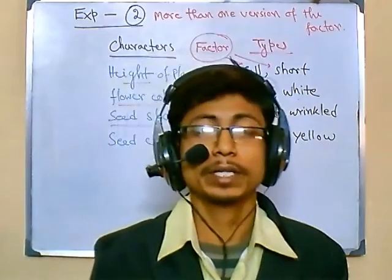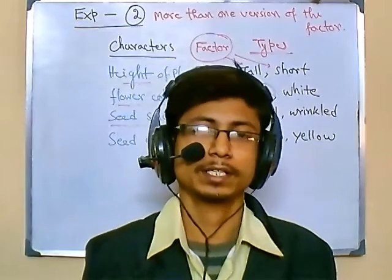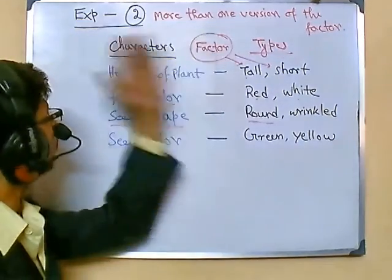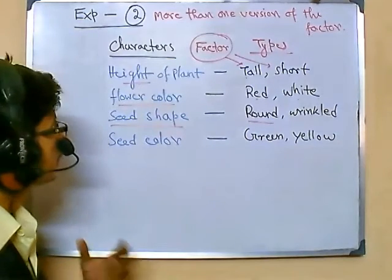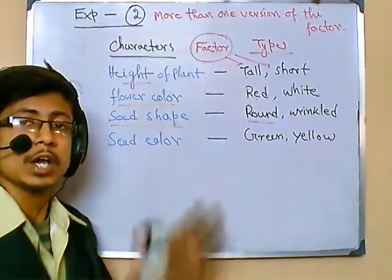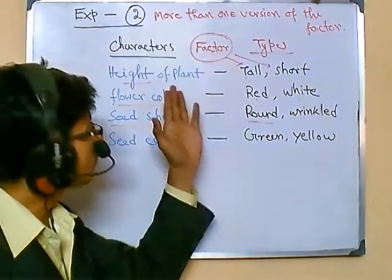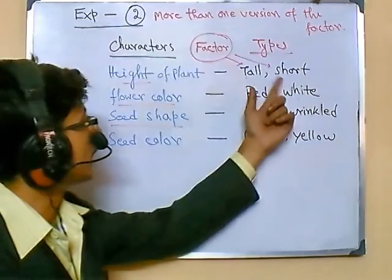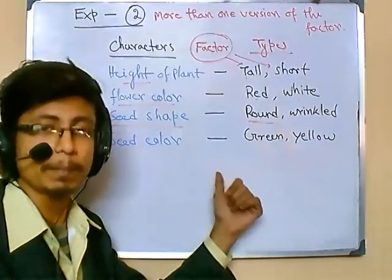Welcome again. We are talking about the basic modern foundation of biology through experiments — the journey with experiments. In the previous discussion we talked about Experiment 2 conducted by Gregor Johan Mendel, and what he found is that the factor responsible for transferring a character from one generation to the next has more than one version, seen across different traits of the pea plants chosen by Mendel.